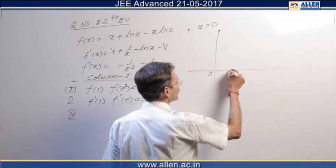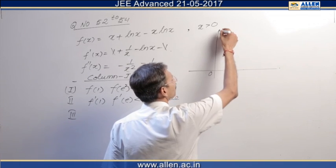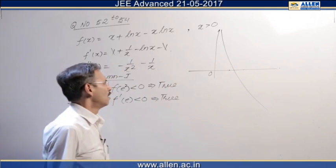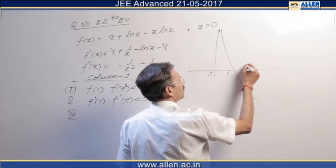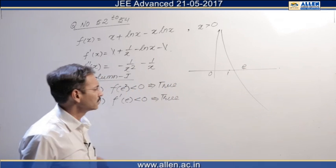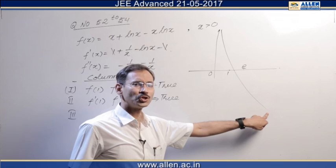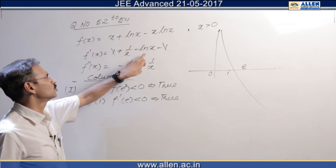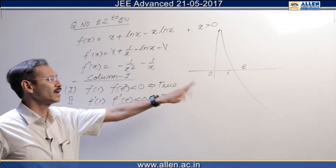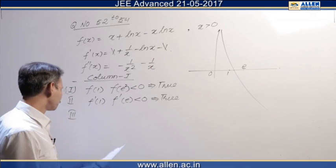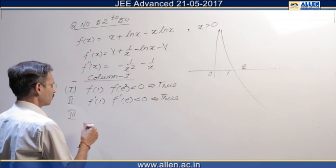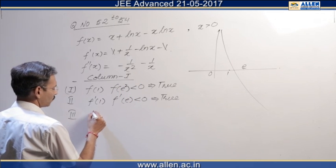we calculated f dash 1 into f dash e is negative. So between 1 and e there will be a root. So my graph will cross this portion. This is 1, this is e, and I've shown that the function approaches minus infinity as x approaches infinity. As it is approaching 0, this approaches infinity. So third statement is wrong. At 0 to 1, the function is positive. The third is false.